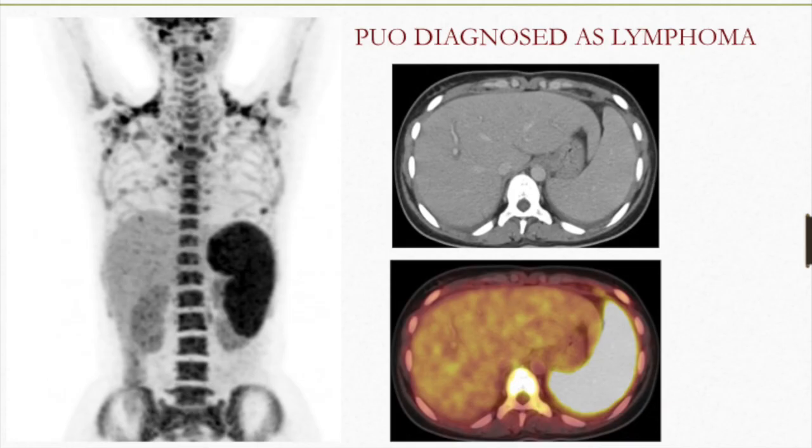Pyrexia of unknown origin is one of the most important indications for PET-CT investigation. We do roughly around 20 to 25% of cases every day related to PUO protocol. In this case, after doing PET there was splenomegaly showing diffuse uptake involving the entire splenic parenchyma, which on histopathology was confirmed to be NHL.